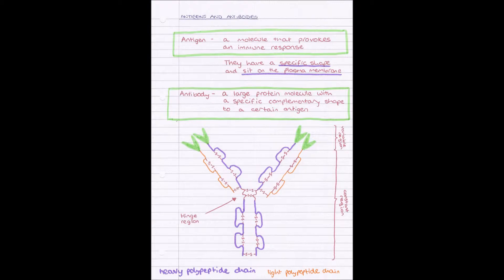An antigen sits on a cell's plasma membrane. If you think back to plasma membranes and cell surface membranes, if you think of glycoproteins and glycolipids, remember when we said they're on human cells they act as receptors and identifiers for white blood cells.